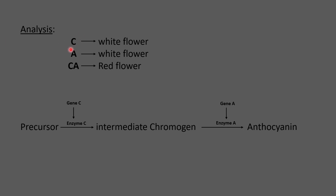When dominant gene C is present alone it produces a white flower, because there is no enzyme A present to convert chromogen into anthocyanine. The same happens with the independent dominant allele A: the enzyme A is present but there is no chromogen to be converted into anthocyanine. But when genes C and A are present together — gene C producing intermediate chromogen and dominant gene A converting that chromogen into anthocyanine — only then is the pigment produced, resulting in a colored flower.